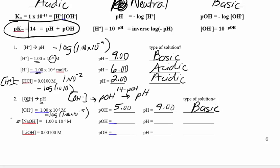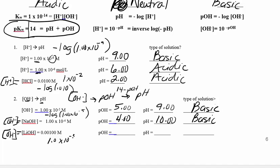For NaOH — everything is strong, so you know the OH directly. With a concentration of 1×10⁻⁴, the pOH is just 4, so pH is 10. That's a base, which makes sense. Same thing for lithium hydroxide: 0.001 equals 1×10⁻³, so pOH is 3, and 14 minus 3 is 11 — also a basic solution.